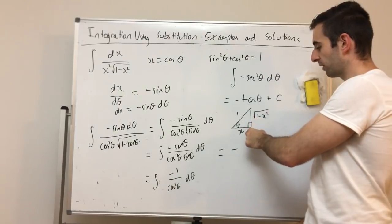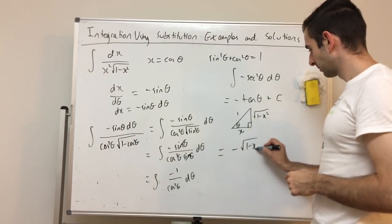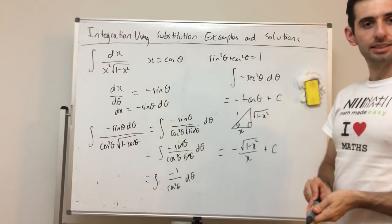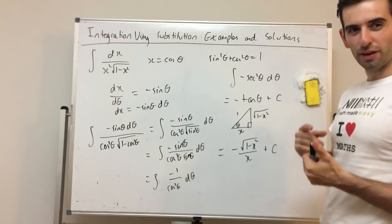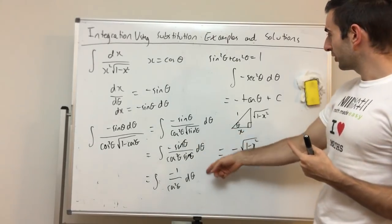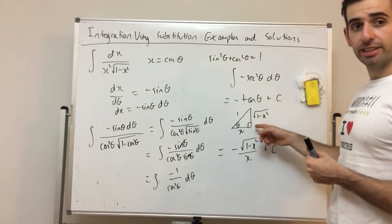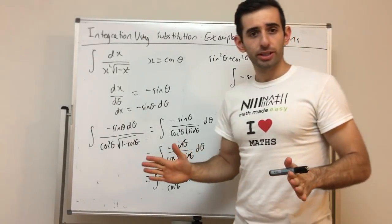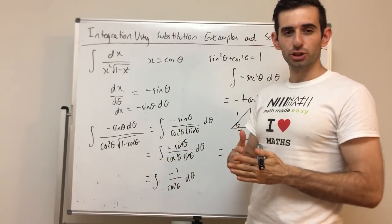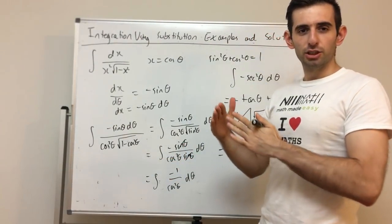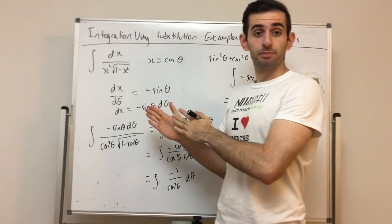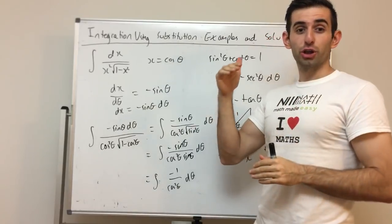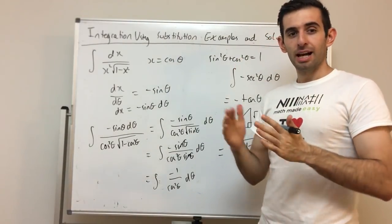From the triangle, tan θ = opposite/adjacent = √(1 − x²) / x. So the final answer is −√(1 − x²)/x + c. Trig substitutions require extra knowledge: your trig identities and drawing a right-angle triangle at the end to back-substitute. I hope you enjoyed this tutorial on integration by substitution — we covered two standard examples and one trig substitution.